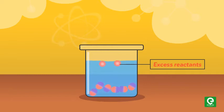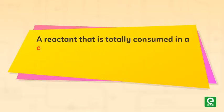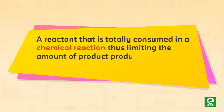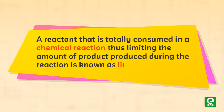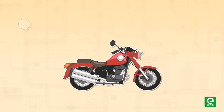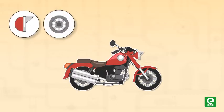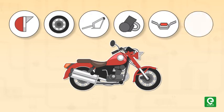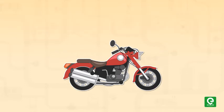After the reaction has run to its completion, a reactant that is totally consumed in a chemical reaction, thus limiting the amount of product produced during the reaction, is known as a limiting reagent. Let's try a simple analogy to understand the concept of limiting reagent.